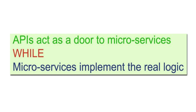Another difference is that APIs act as a door to microservices, while microservices are implementing the real logic. Whatever logic you want to implement — for example, let's suppose you want to implement an application for your organization related to some billing module — within that billing module you might have different types of services, small fine-grained services. Each service is implemented separately in the form of a microservice, and then on top of that you can have any number of APIs which are going to expose those microservices.